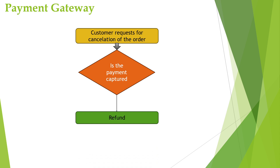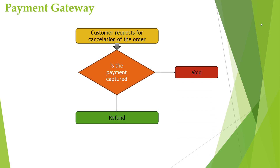But if the payment was not captured — for example, if the customer had chosen cash on delivery and cancels the order before it is delivered — then the transaction would not have been captured, and there would be no question of a refund. In such cases it will be treated as void or rejected. This is how the transaction flow happens.